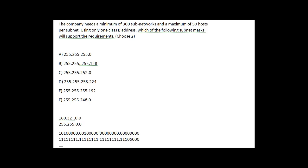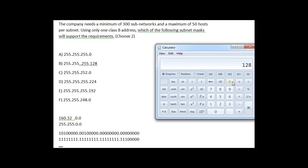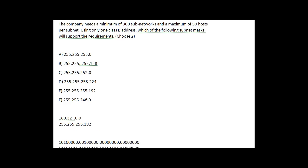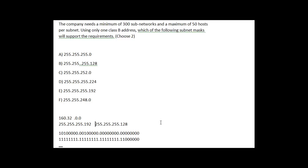So this gives us our subnet mask. 255.255.255 dot — the 128 bit plus the 64 bit — would be 192. That gives us a subnet mask of 255.255.255.192, which achieves our goals. Another valid subnet mask would be 255.255.255.128.